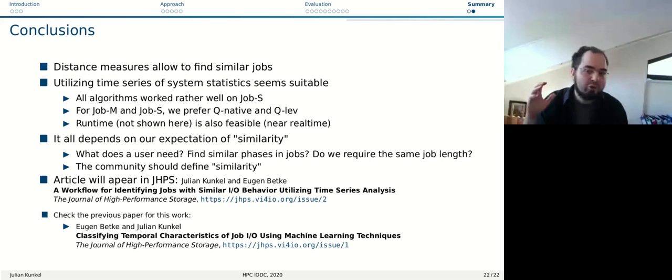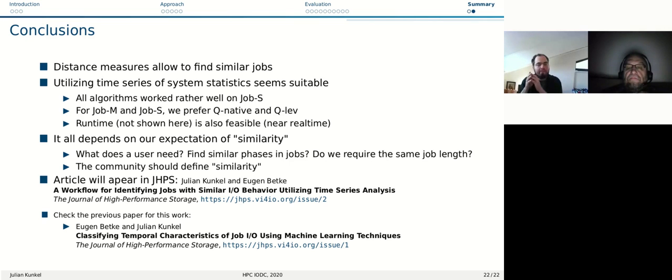It would be great that the community can come up with meaningful similarity metrics or definitions, because ultimately one research group is unable to do so. Our little survey showed that utilizing time series of system characteristics are suitable. The algorithms work all well on job S, but for job M and job L, we generally preferred this Q-native and Q-Lev algorithm. That was our definition of similarity that worked well. All these algorithms can be run in a sufficiently short amount of time. Even if you have 600,000 jobs and you add a new job and ask which job is this similar to, it goes rather quick - it's nearly real time. Our expectation of similarity is important and must be defined by the needs of the user. Is it depending on similar phases? Do we require the same job length? How do we handle reruns? This is crucial because if you rerun the same application twice, you don't get the exact behavior - you get slightly different behaviors, shifts in runtime.